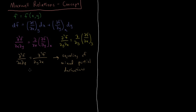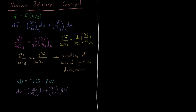We have thermodynamic functions. We have du equals TdS minus PdV. We also showed in terms of partial derivatives that du equals (du/dS) at constant V times dS, plus (du/dV) at constant S times dV. So u is a function of S and V — the natural variables — just like f is a function of x and y. That is equal to TdS minus PdV, from the equivalent partial derivative statements.